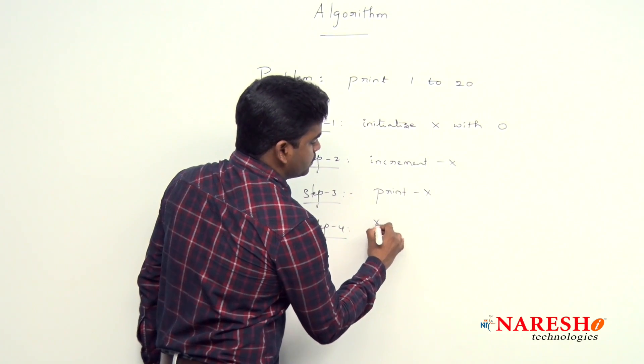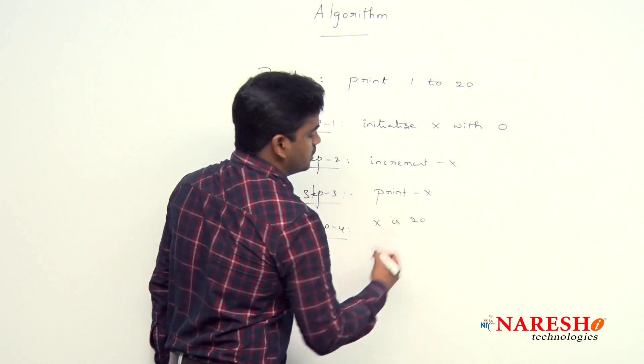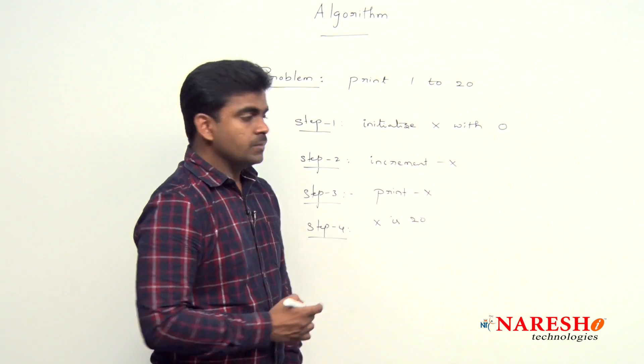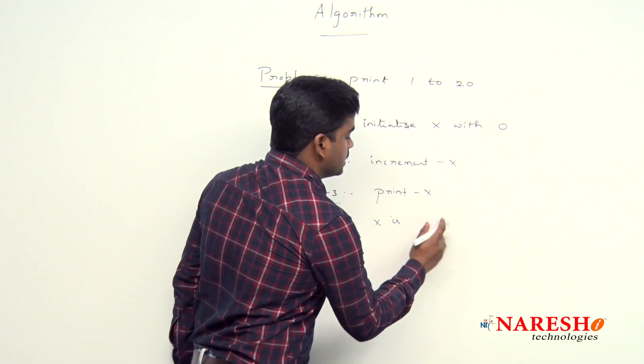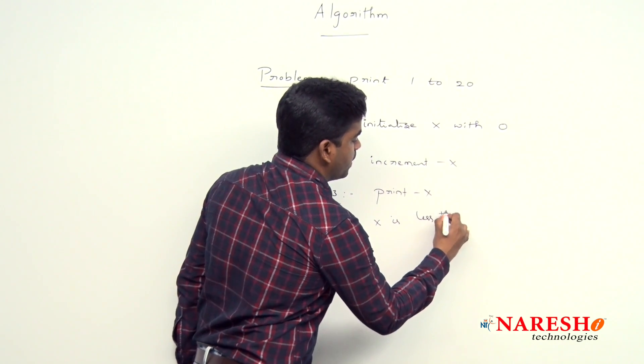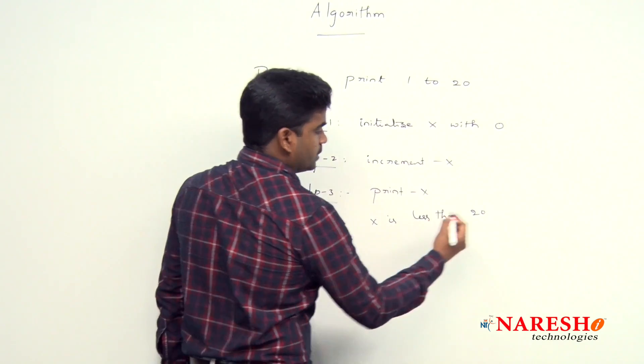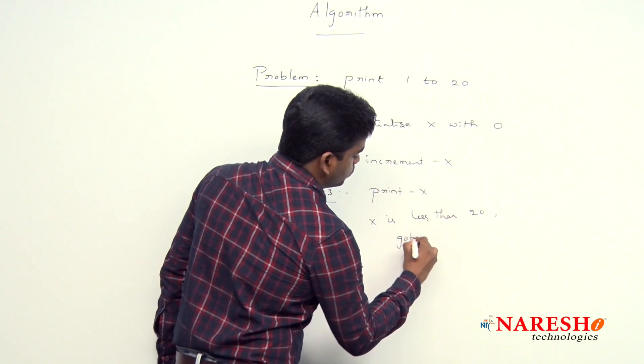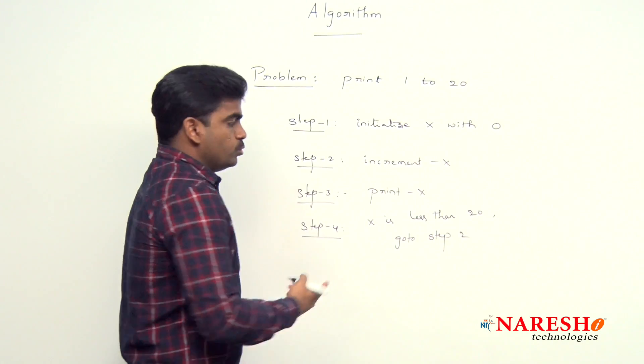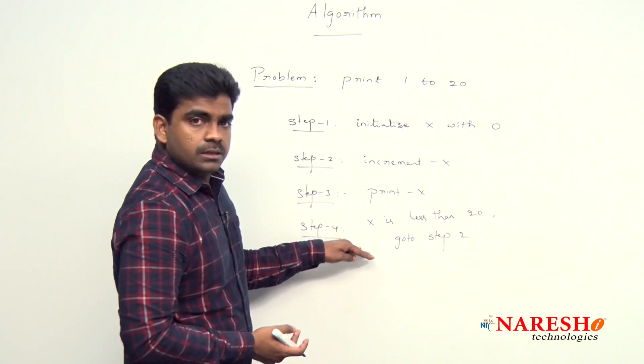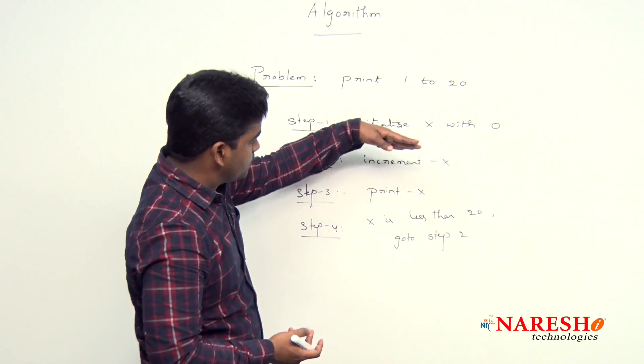Suppose if x value is 20, then stop. Or if x value is less than 20, then simply go to step 2. That is nothing but again, the program procedure starts from here.